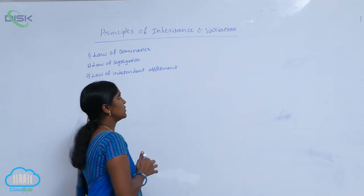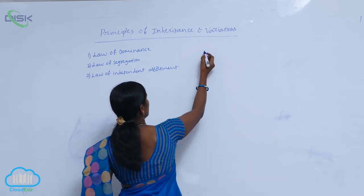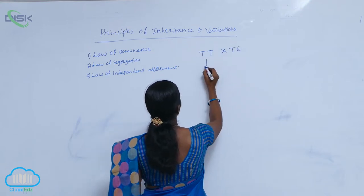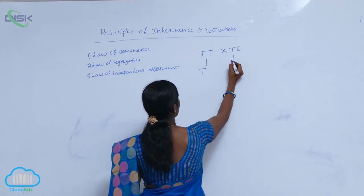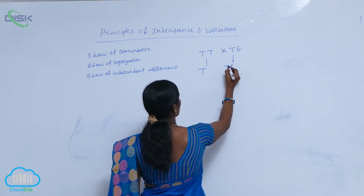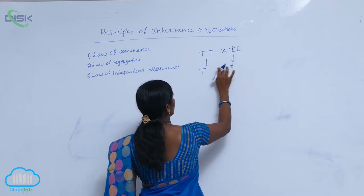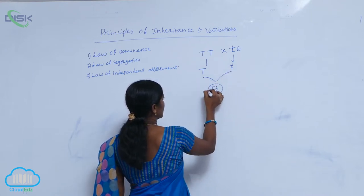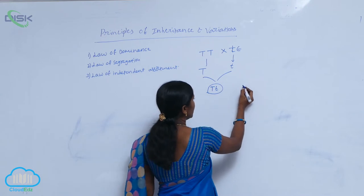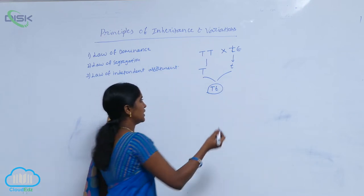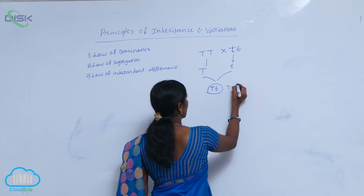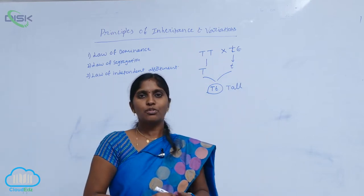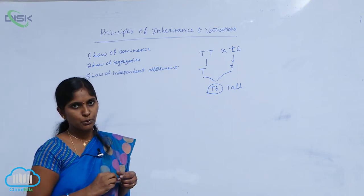Here, take the monohybrid cross. The parents are TT and tt. The gametes are T and t. The cross between these two results in Tt. The character of the progeny is the dominant character, which is the tall character. The dominance continues from the parental to progeny. That is called the law of dominance.